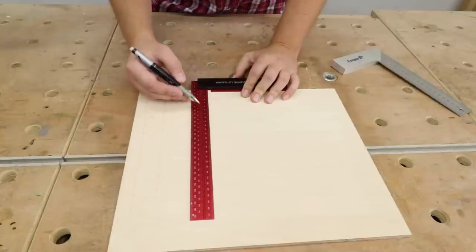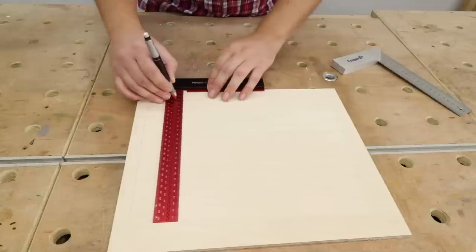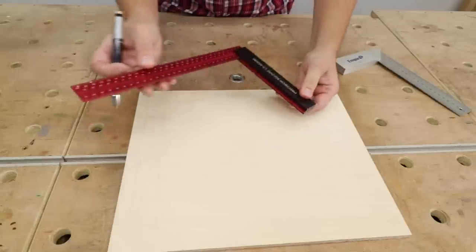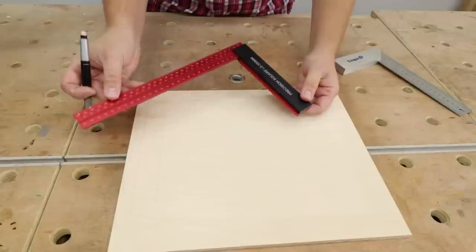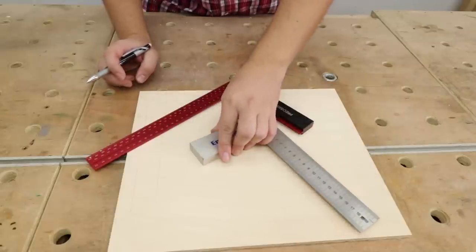Plus the holes in the middle here are every one millimeter increments so you can do horizontal lines as well. It's an ever so simple tool to use but it makes a world of difference when you compare it to a normal square.